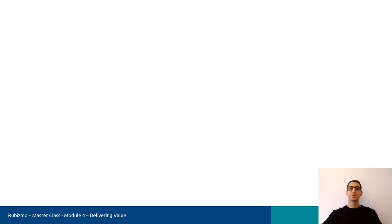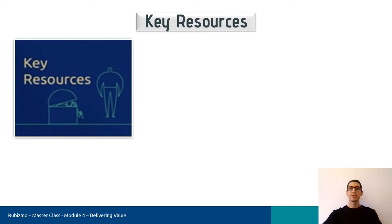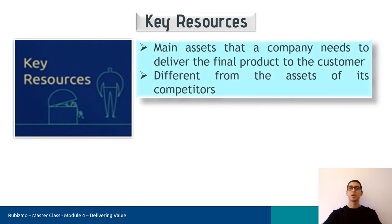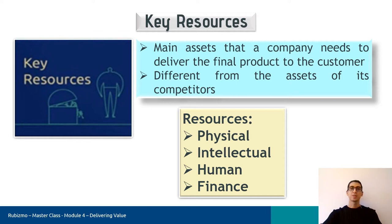Key resources enable a company to offer its value proposition — in other words, they are the assets that a company needs to deliver the final product or service to customers, and therefore can differ from the assets of competitors. We can have different kinds of resources: physical resources such as buildings, machinery, and equipment; intellectual resources and intangible assets such as trademarks or copyrights; human resources, which are the most important in many organizations, especially those that need extensive knowledge; and finally, financial resources and credits. Entrepreneurs have to evaluate available key resources and identify which ones are essential for business success.